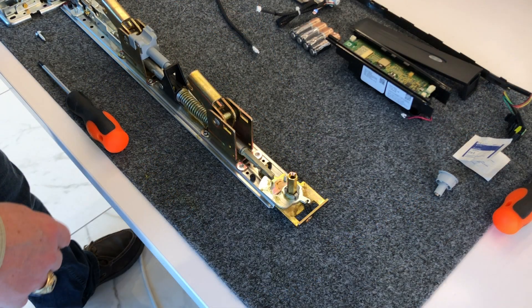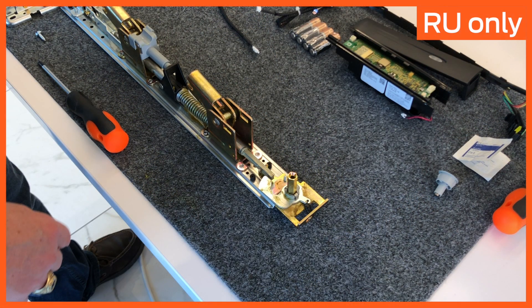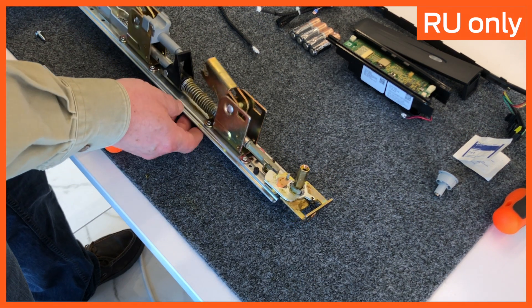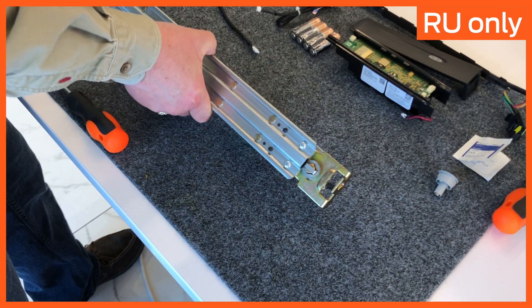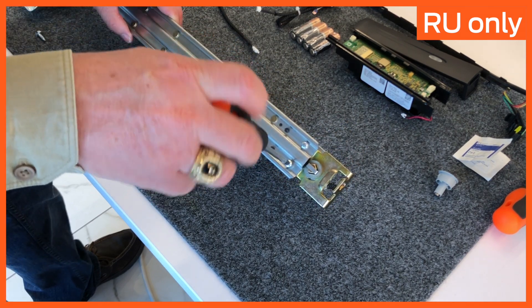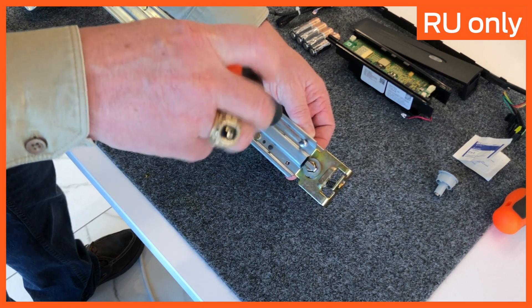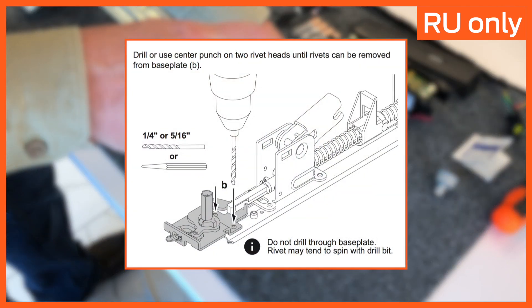The following steps are for the RU kit only. If your device has a manual dogging module, remove it by turning over the base plate and removing the two screws. If rivets were used, drill them out according to the installation instructions.